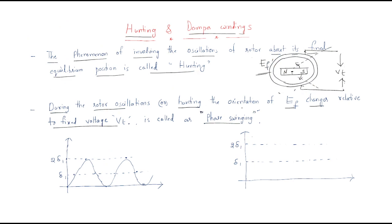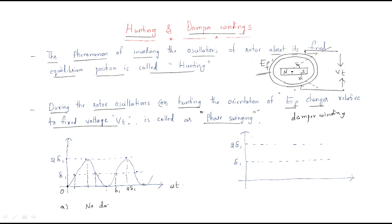To reduce hunting, we provide damper windings. If we don't have any damper winding — that means no damping — the load angle varies continuously: from 0 to δ1, then up to 2δ1, then back down to δ1, then to 0, and repeats. This is the case of no damping.